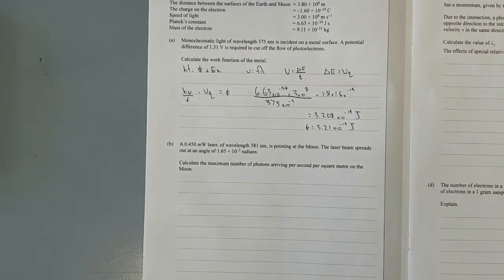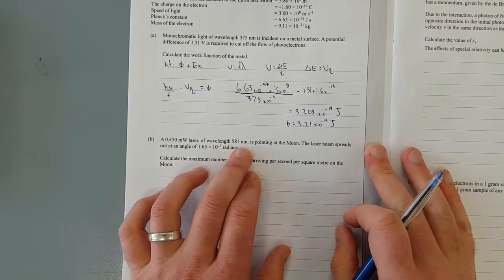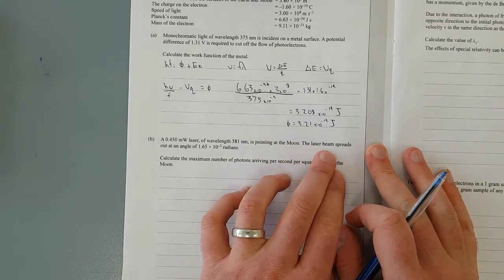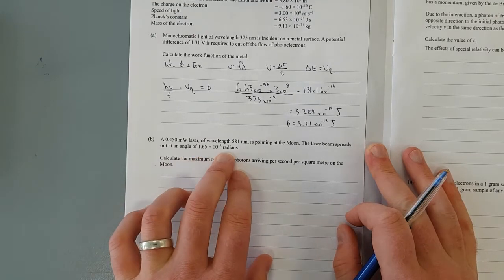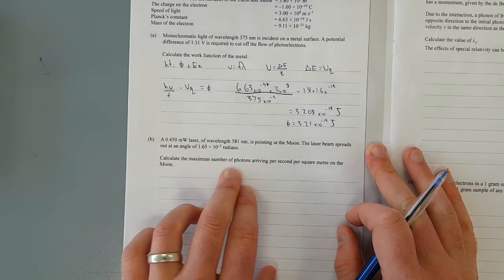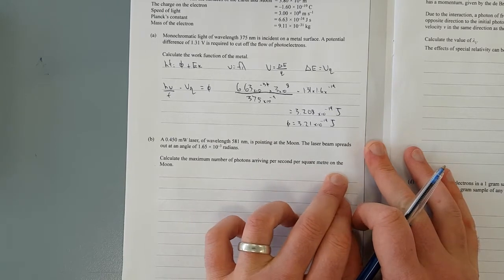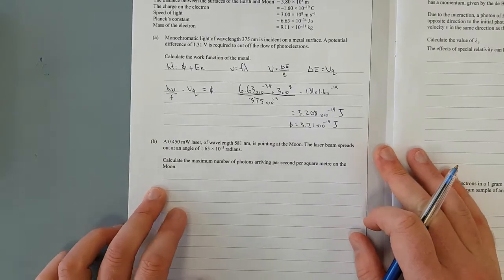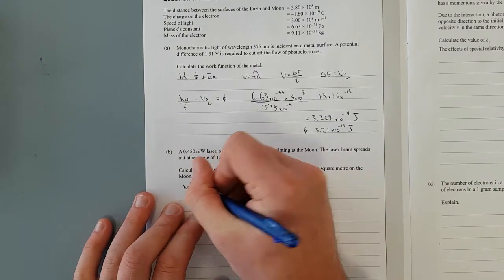That was pretty easy. 450 milliwatt laser, that's a doozy of a laser, of wavelength 581 is pointing at the moon. The laser beam spreads out at an angle of 1.65 times 10 to the negative 3 radians. Calculate the maximum number of photons arriving per second per square meter on the moon.